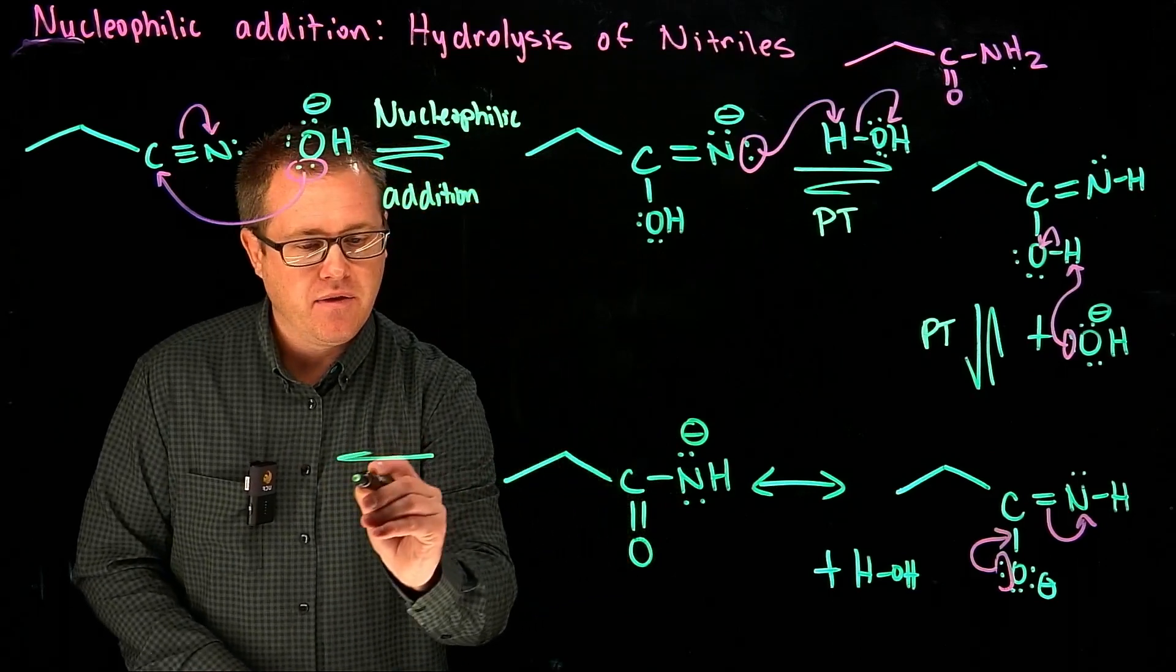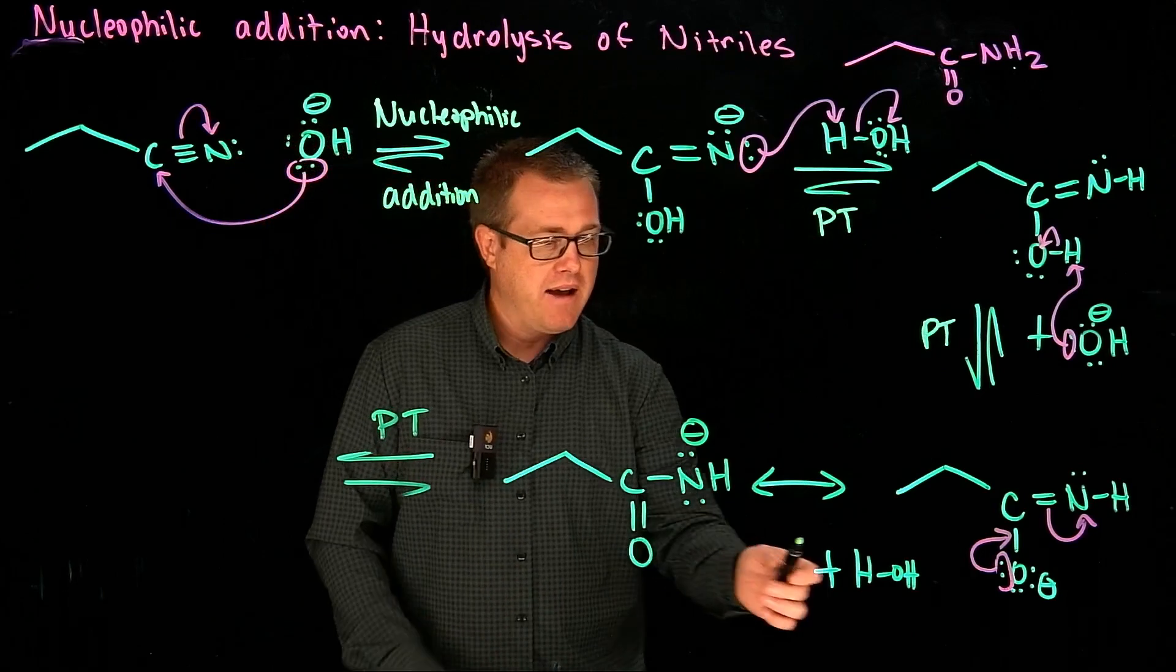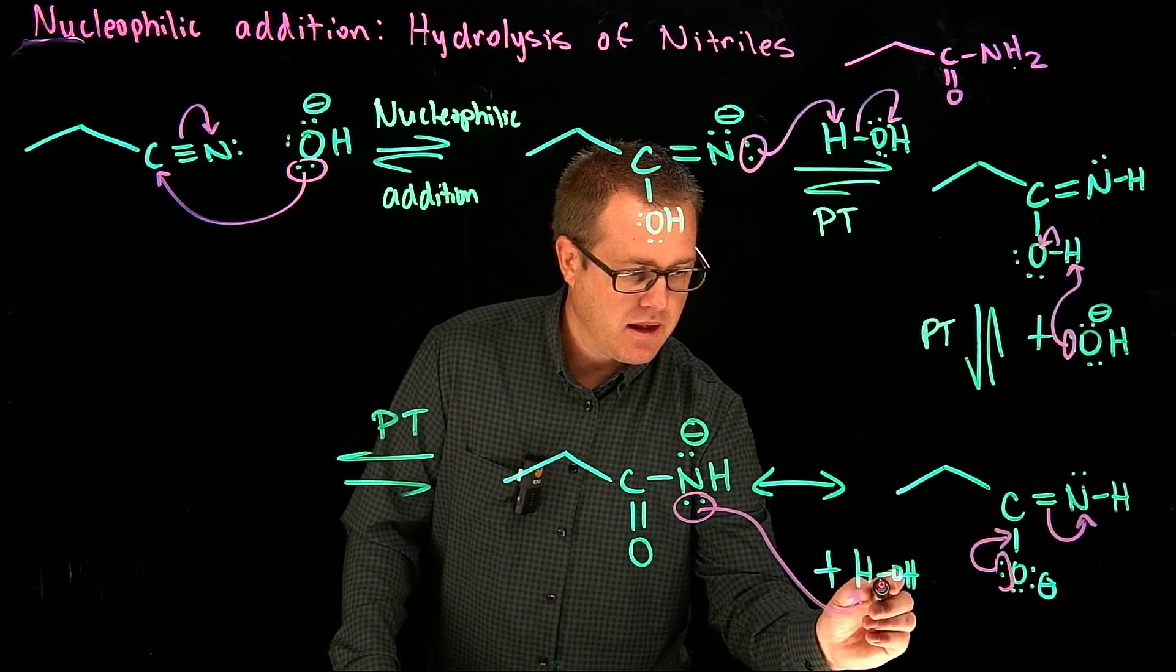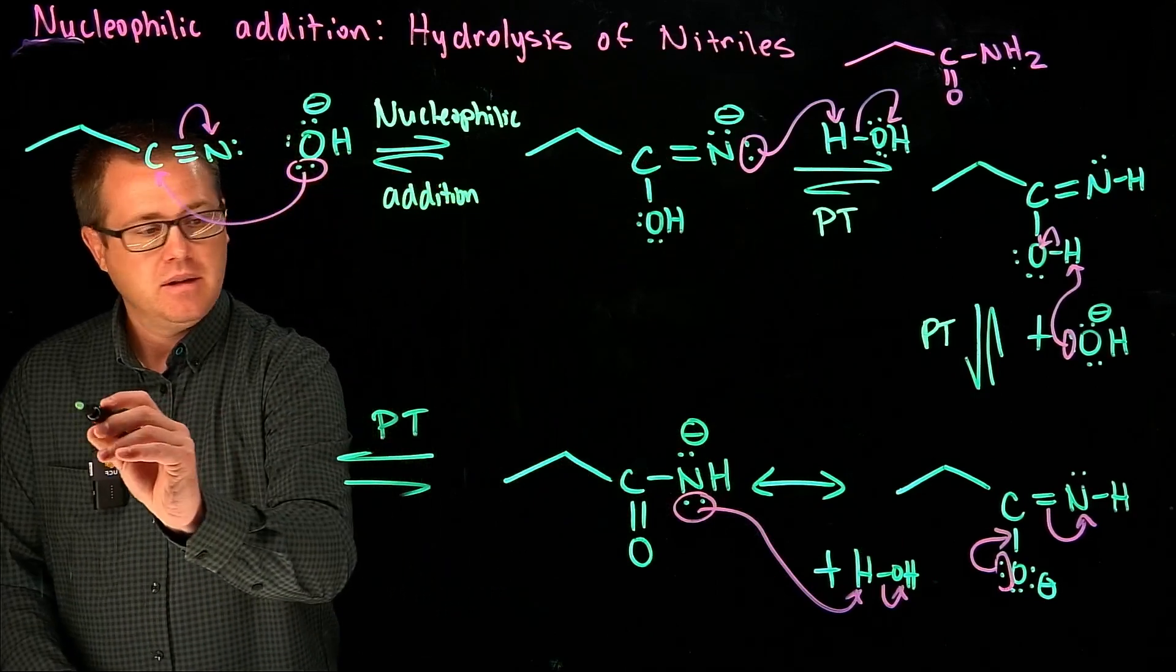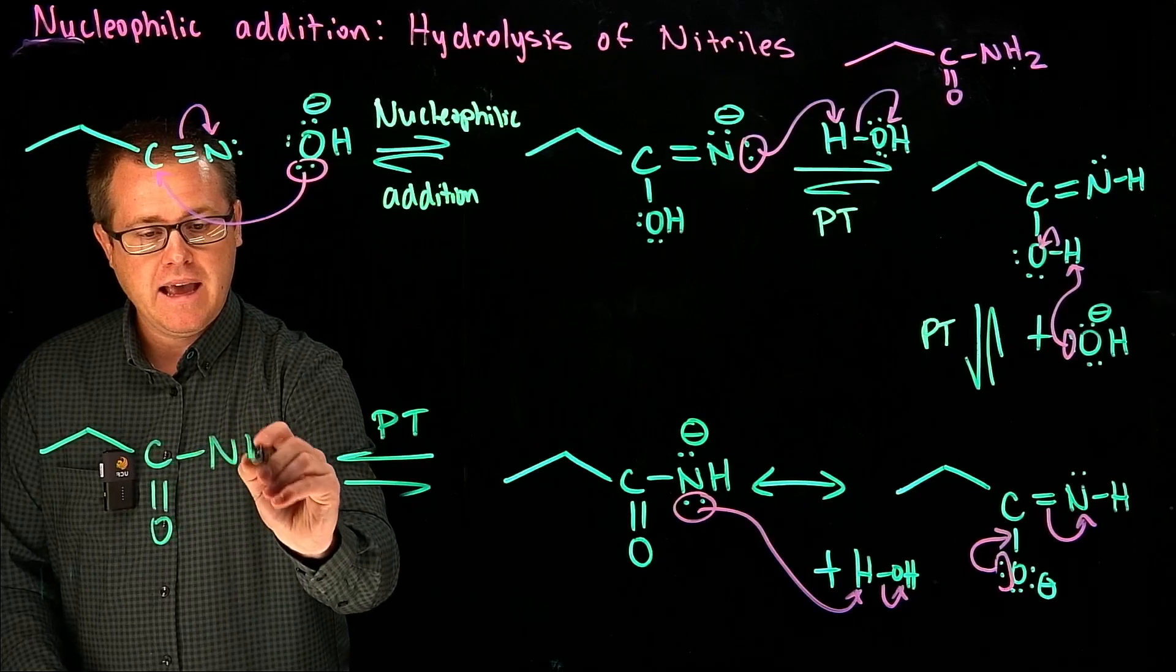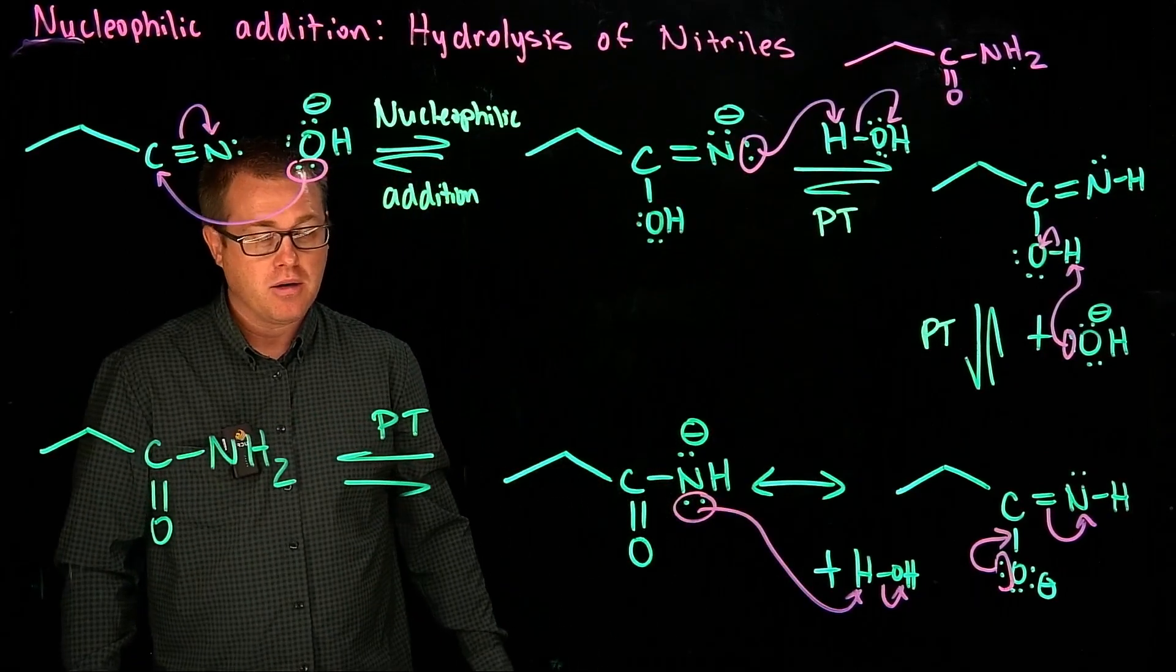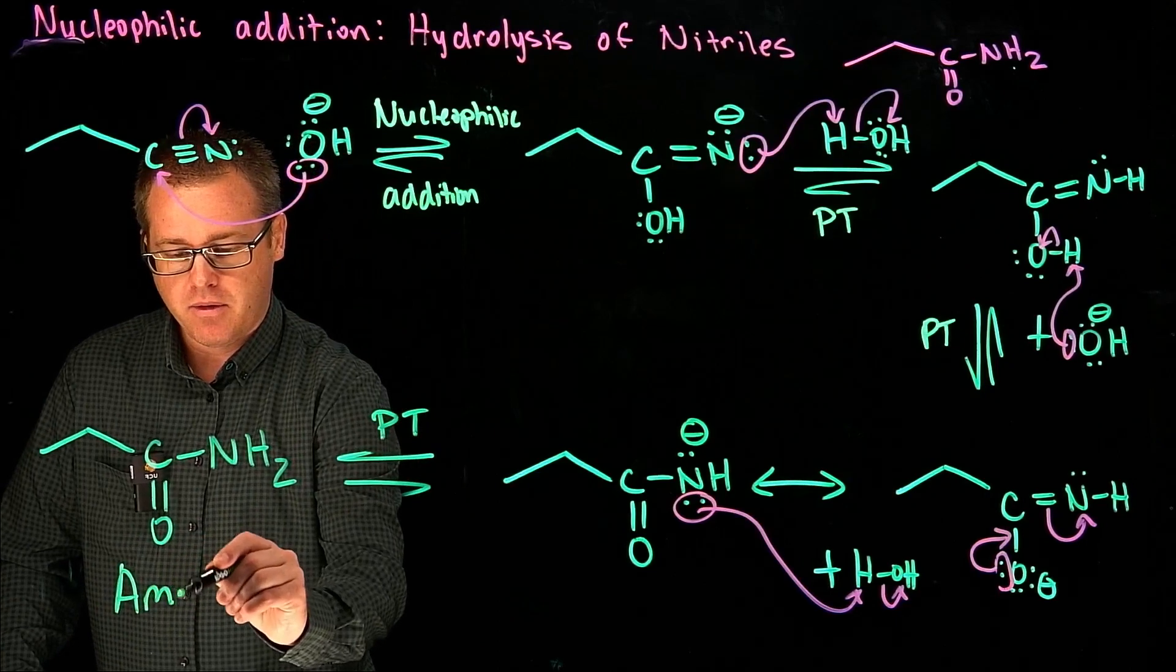And now we can invoke a proton transfer step, because we have water present. So that water is going to act as our acid, like that, and we're going to protonate that nitrogen atom. And when we protonate that nitrogen atom, what do we get? We see that—we see that that matches our target. And that is our product. So that is our amide that we want to have.